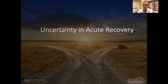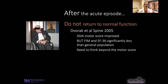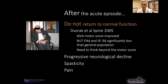The reality is that there's a lot of uncertainty in the acute recovery. We don't know which path our patients are going to go down — are they going to get better or not? Is it going to happen rapidly or slowly? Even after the acute setting, we can see ongoing problems for patients with central cord injuries. They do not return to normal function. They may have motor score improvement, but their functional measures and SF-36 remain substantially lower than that of the general population. We also have to think about progressive neurological decline, spasticity, and pain that may be a leftover effect of the cord injury as well as ongoing compression in the setting of non-operative management.